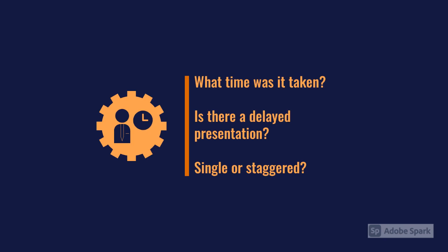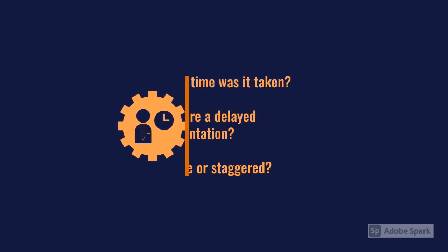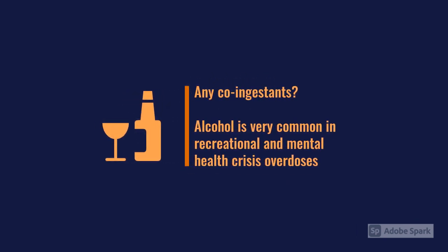Some overdoses will present having taken a significant bolus at once, some may take staggered overdoses over a couple of days, so it's really important to understand the timeline. You also want to think about co-ingestants - quite commonly in the setting of intent to self-harm, they'll take drugs alongside alcohol, which has ramifications for absorption and how accurate the history will be.